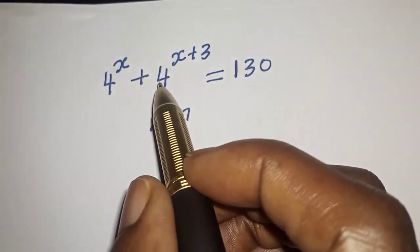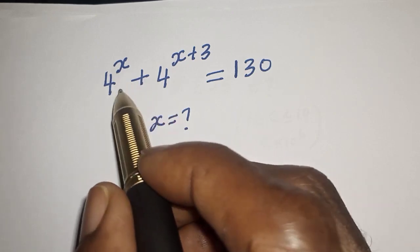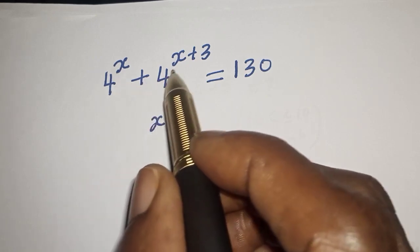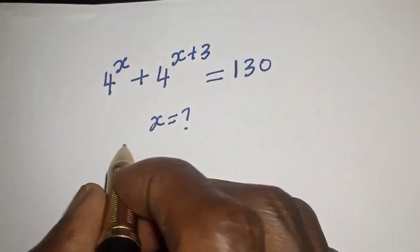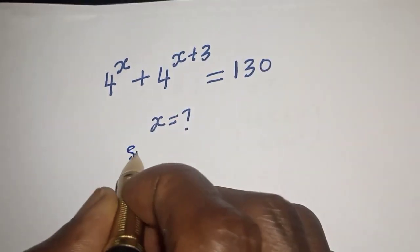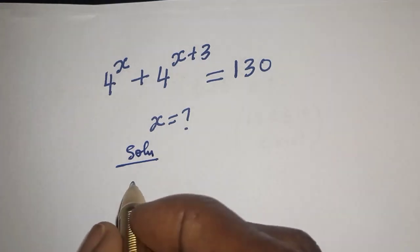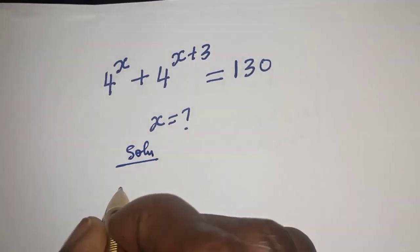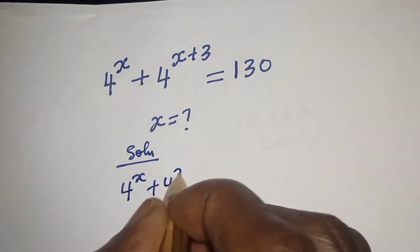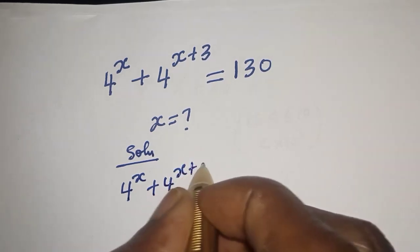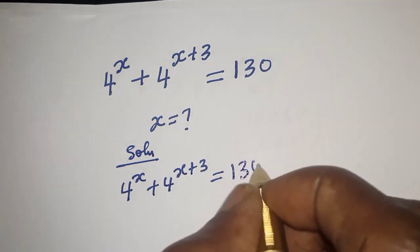Hello, welcome to Magis. In this class we want to find the value of s from this equation: 4 raised to power s plus 4 raised to power s plus 3 is equal to 130.